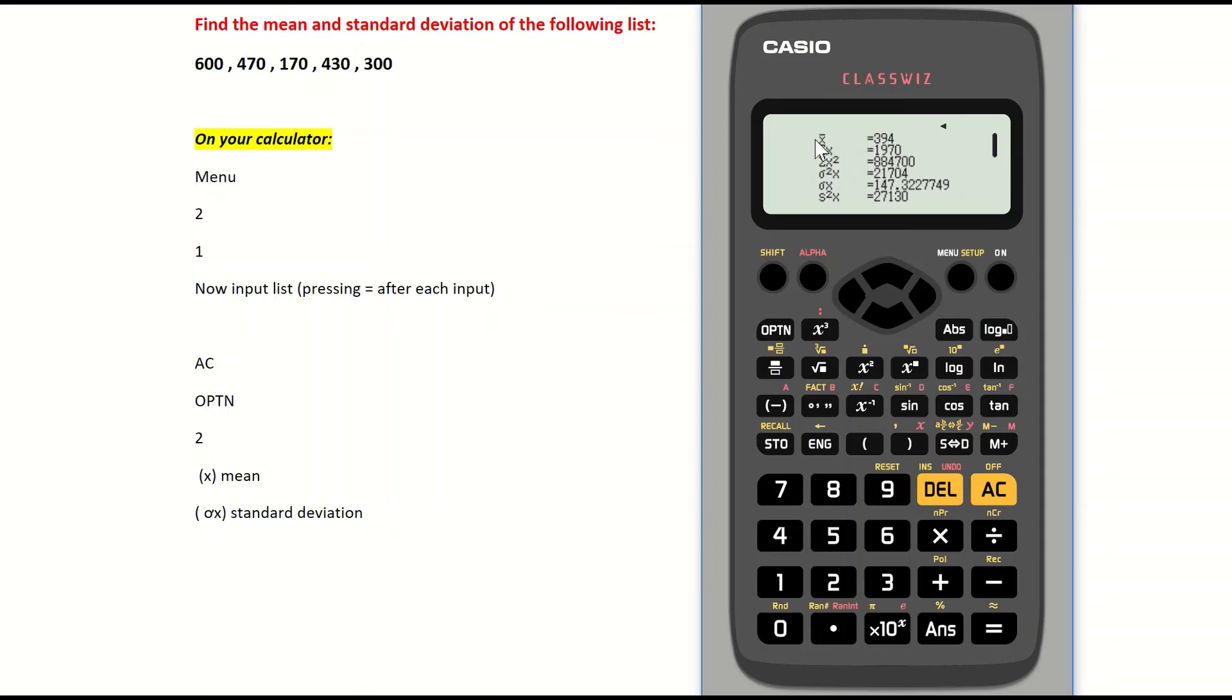Two of them are important. The first one, x̄ (x bar), represents the mean. The mean for this list of numbers is 394. The standard deviation is the sigma symbol, σx (sigma x), and the standard deviation is 147. The mean is the first one, and the second-to-last one is the standard deviation.